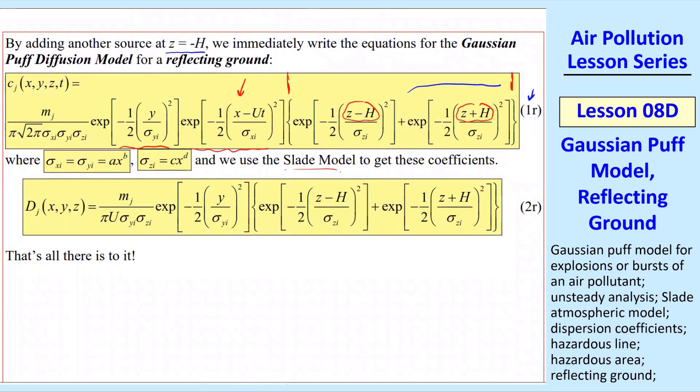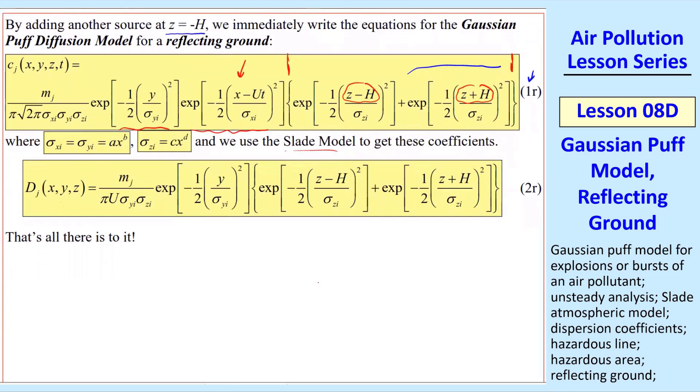We still have the same Slade model. Everything else is the same. When we integrate, we get the same equation we had before, except we have this extra term added, where we have z plus h instead of z minus h. Now I call this 2r for reflecting. So that's all there is to it.